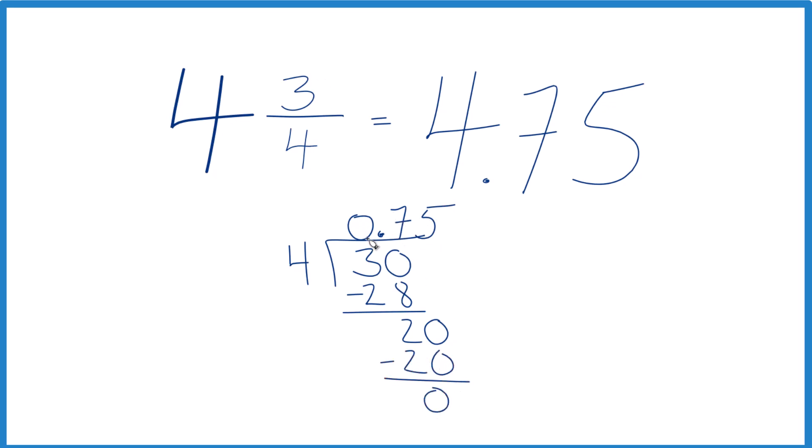So 3/4, that's equal to 0.75, or you could call it .75. 4 plus .75 gives you 4.75.